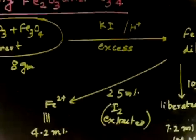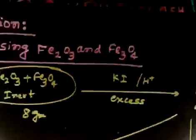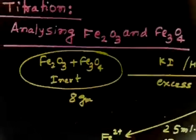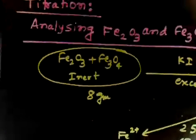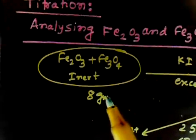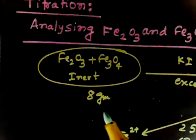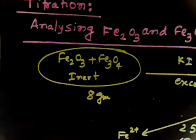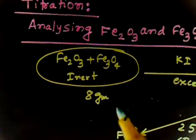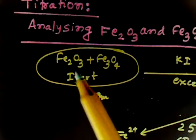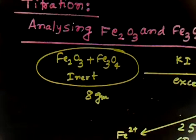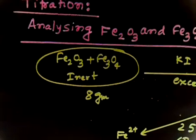Let us discuss. This question says we have an initial sample of Fe₂O₃ plus Fe₃O₄ plus some inert material. The weight of the initial sample is 8 grams. My target is to find the percentage of Fe₂O₃ and percentage of Fe₃O₄ in this given sample.